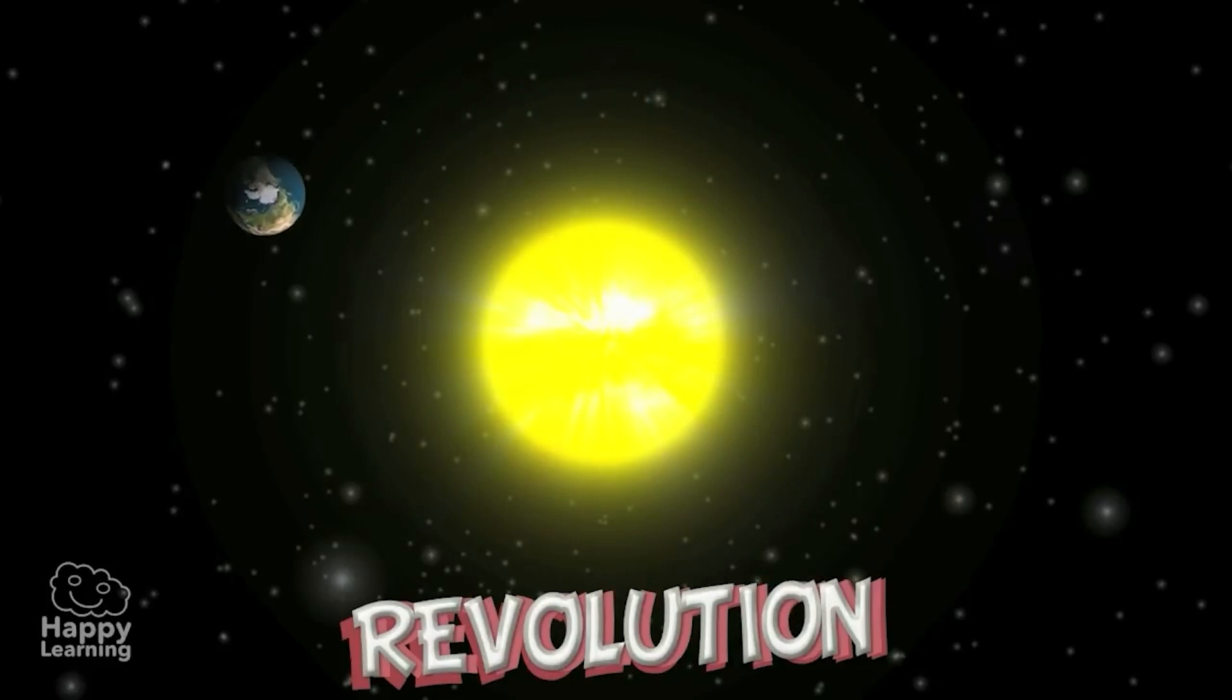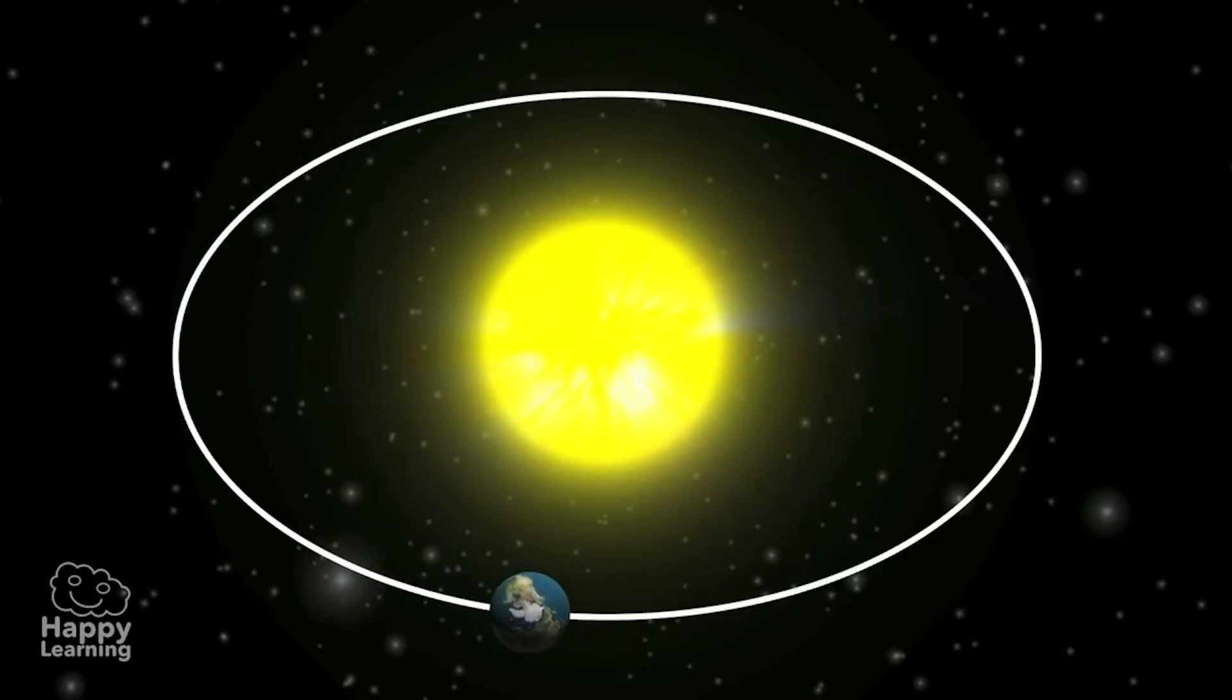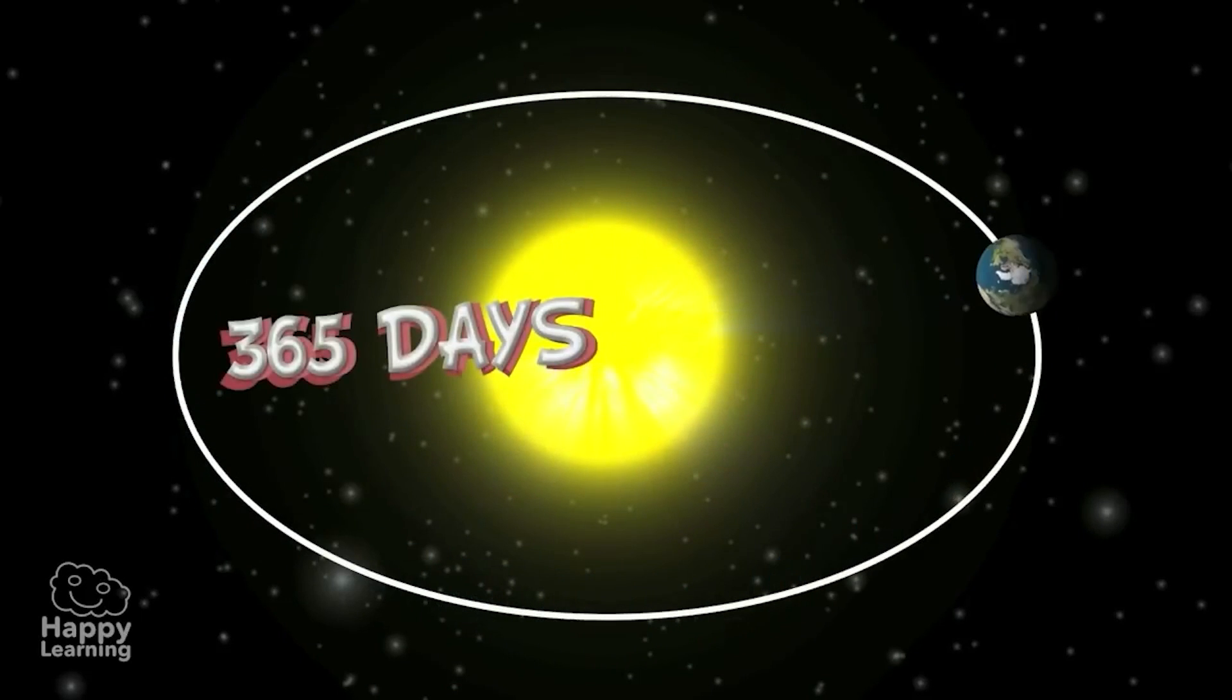That might sound a little strange, but if you look, you'll see it's simply the journey that the Earth makes around the Sun. Do you know how long it takes the Earth to make a complete revolution around the Sun? Well, it takes 365 days, exactly one year.